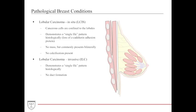Lobular carcinoma involves breast cancer proliferating in the lobules rather than the ducts, and similarly has in situ and invasive forms. In situ lobular carcinoma is confined to the lobules and presents with a single file pattern on histology due to loss of E-cadherin adhesion protein. E-cadherin keeps cells contained; when it is no longer expressed, cells migrate in a single file pattern. E-cadherin is a calcium-dependent process — a useful way to remember this. Lobular carcinoma in situ does not have a mass but can present bilaterally, so always check both breasts. There is also no calcification.